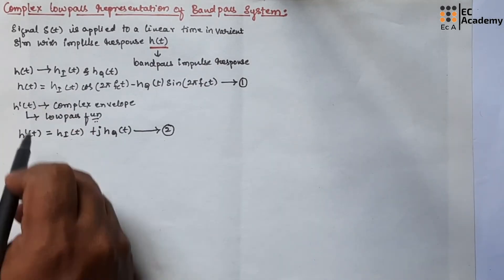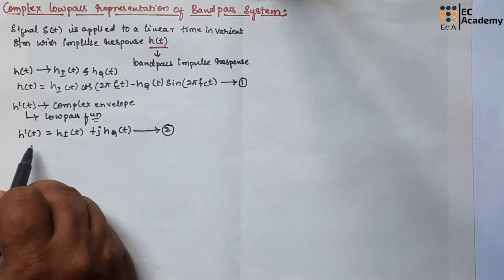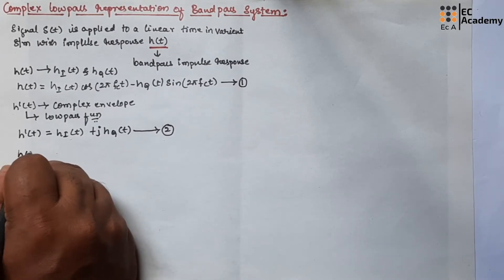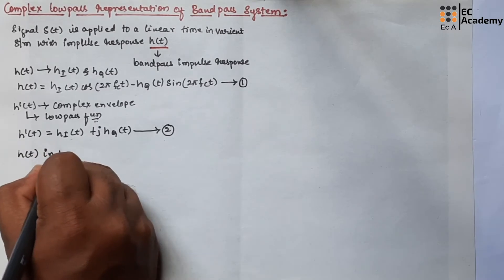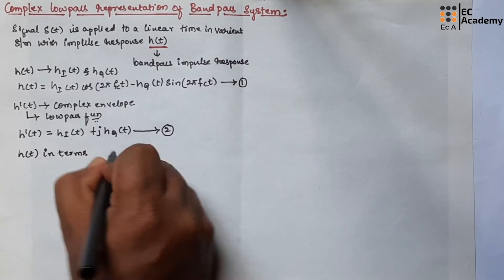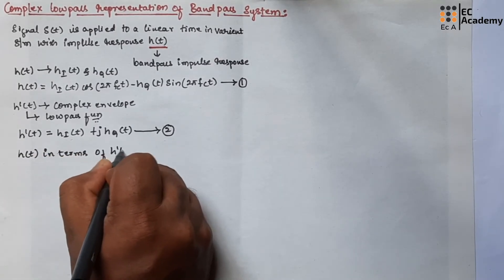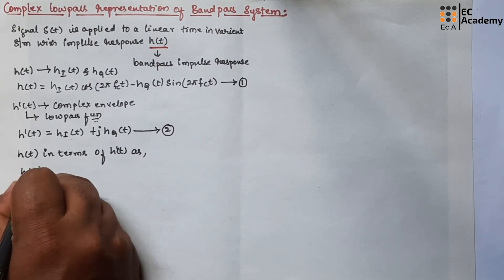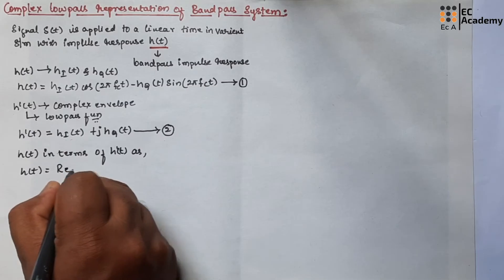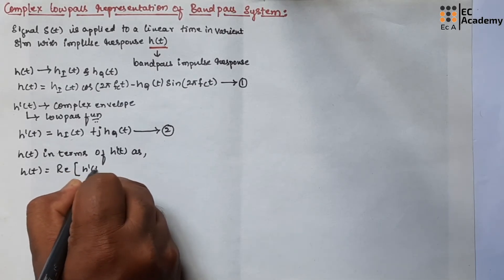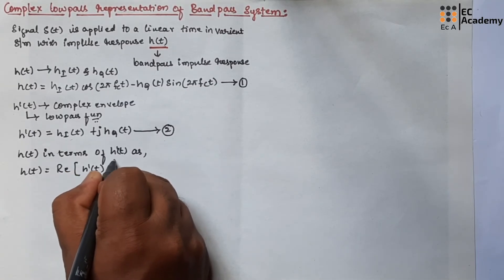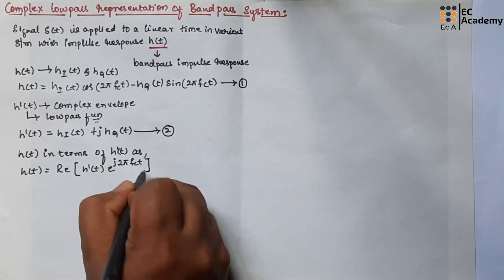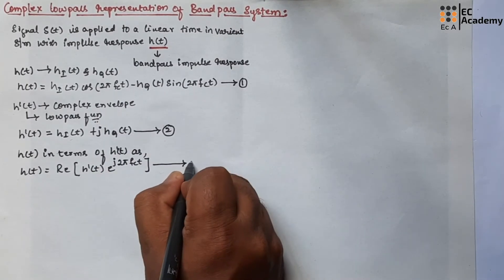Now we can represent H of t in terms of H dash of t as: H(t) = Re{ H̃(t) · e^(j2π fc t) }. Let us call this equation number 3.